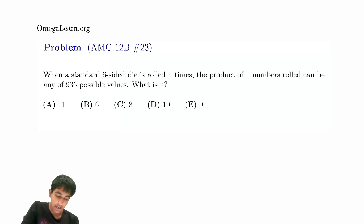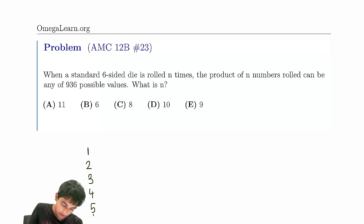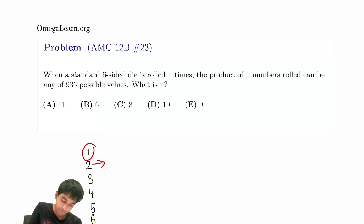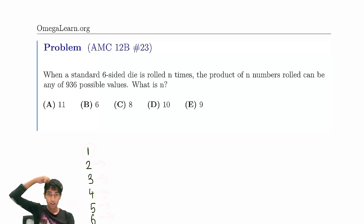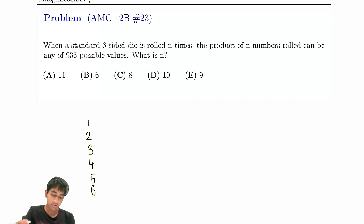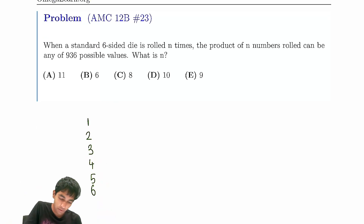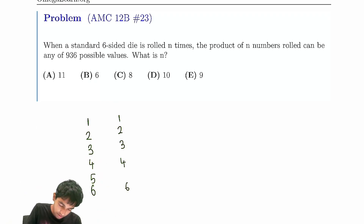The trick here is seeing that you either have no factors, a factor of 2, a factor of 3, two factors of 2 (i.e., 4), a factor of 5, or a factor of 2 and 3 (i.e., 6). For now, just ignore the 5 for simplicity — we'll worry about the 5s at the end. So we're just considering 1, 3, 4, or 6.